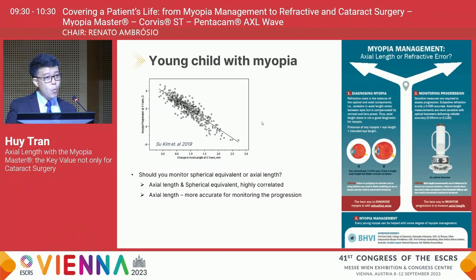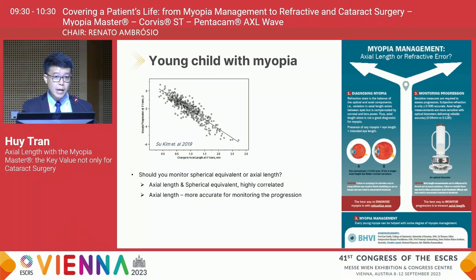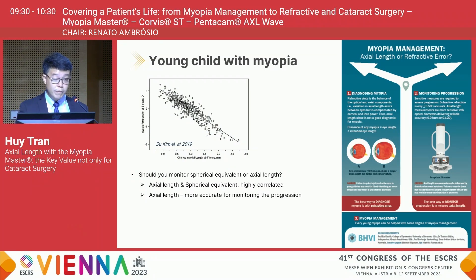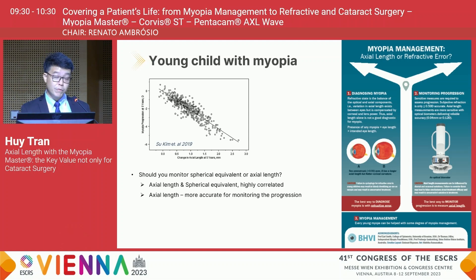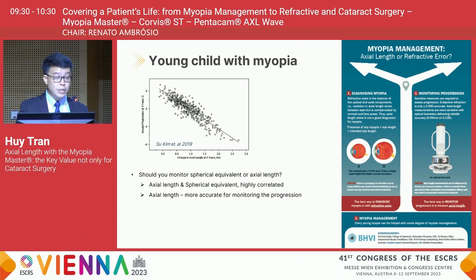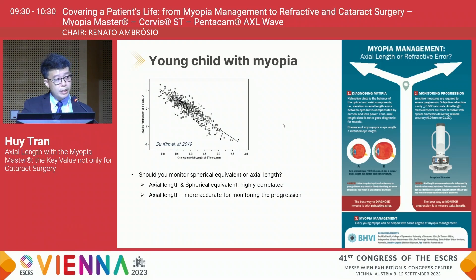Myopia has been worldwide accepted to be monitored and diagnosed with the change in spherical equivalent. However, with the development of advanced technology, although spherical equivalent and axial length are highly correlated from multiple evidence, nowadays axial length has become a more reliable and repeatable measurement. The stretching of the eyeball and axial elongation are the nature of myopia, and there is multiple evidence proving that axial length measurement is a more repeatable and reliable parameter compared to spherical equivalent.